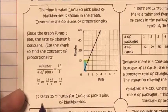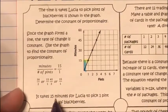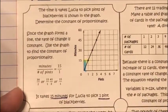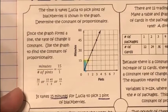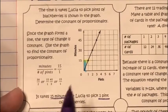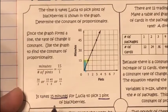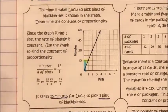That means it takes 15 minutes for Lucia to pick one pint of blackberries. Y is directly related to x: 15 minutes is your y and one pint is your x.